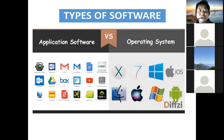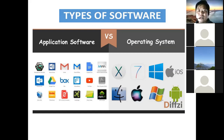So this is the difference — application software serves different purposes for different needs. Users install different application softwares, and the operating system has two main types. Examples of operating systems include Mac, Apple iOS, and Android.